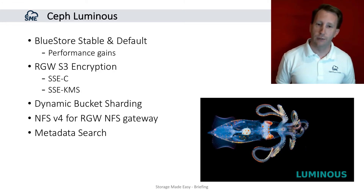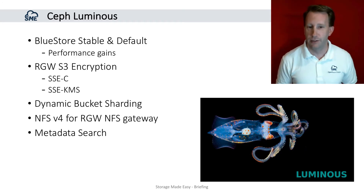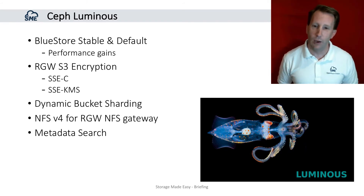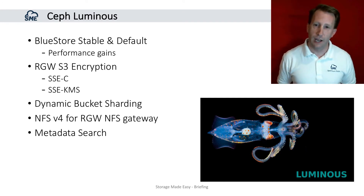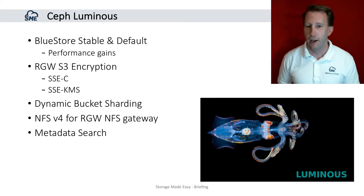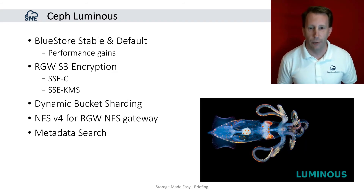Dynamic bucket sharding takes bucket sharding a step further by automating the process for users. NFS v4 integration is moved into the NFS gateway, allowing legacy applications to continue to migrate data into the Ceph object store and allowing new applications written against S3 and Swift API to consume that data. And last but not least, metadata search will be coming to Ceph Luminous.